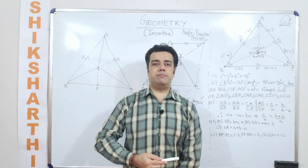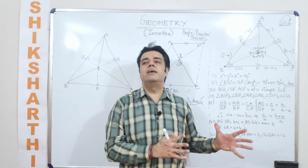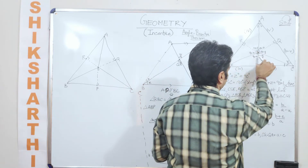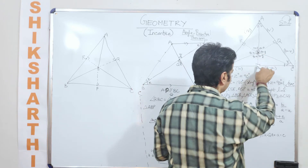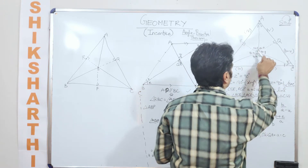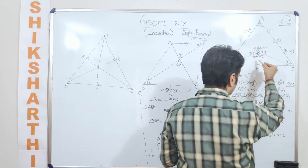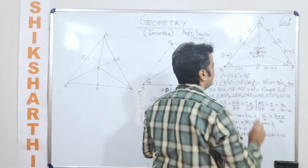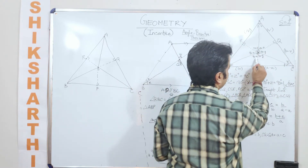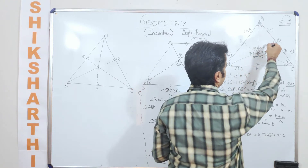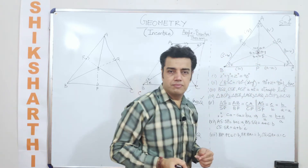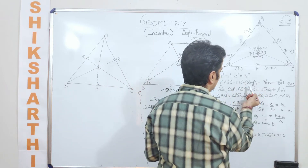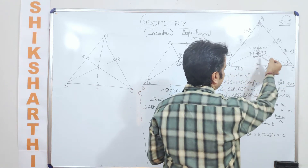Twice of X plus twice of Y plus twice of Z equals 180 degrees, which means X plus Y plus Z equals 90 degrees. Now, if this is X, and we already know these are right angles because these are the three perpendiculars drawn from S onto the sides, then if this angle is X, this becomes 90 minus X. Similarly, 90 minus X, 90 minus Z, 90 minus Z, 90 minus Y, and 90 minus Y.